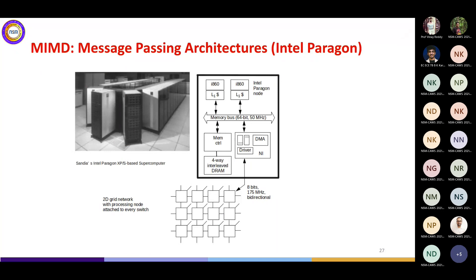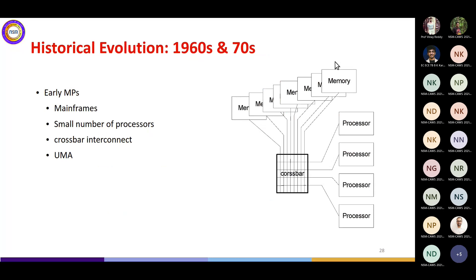Another message passing architecture example is the Intel Paragon, where each compute node is itself a shared memory machine — multiple processors sharing memory within the node — and different compute nodes are connected using a message passing interconnect. This kind of hybrid architecture is seen in real-life clusters and supercomputers, where each machine could itself be a shared memory architecture, but different machines communicate via message passing.